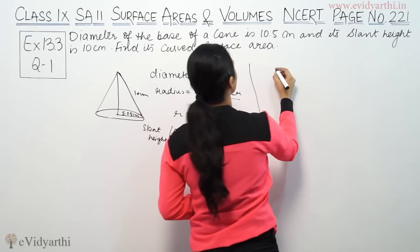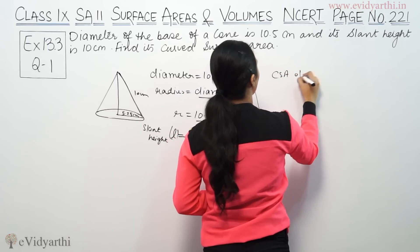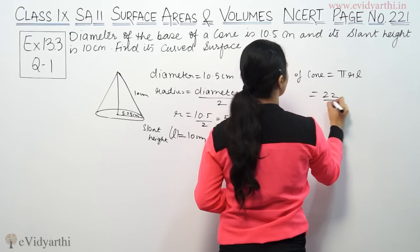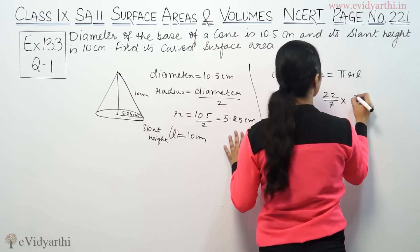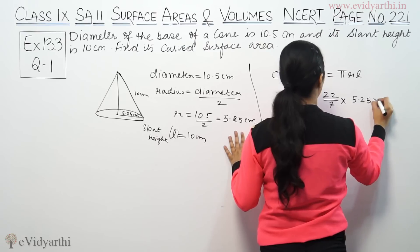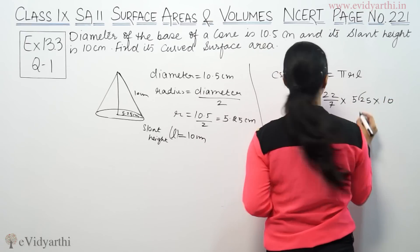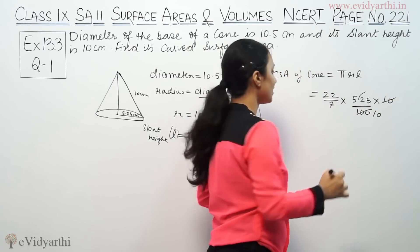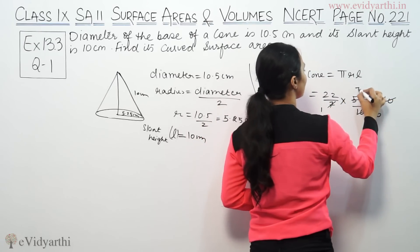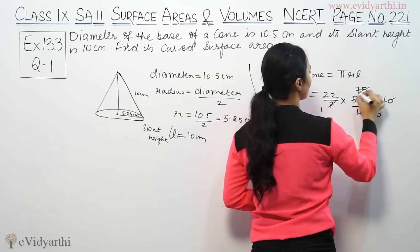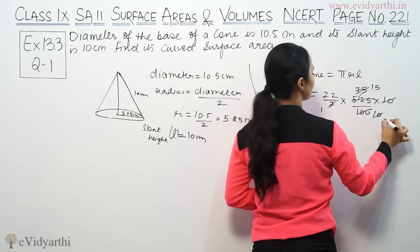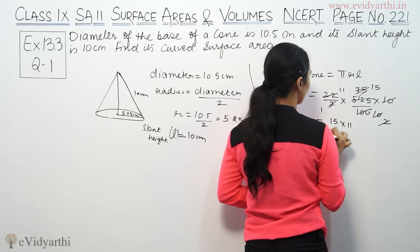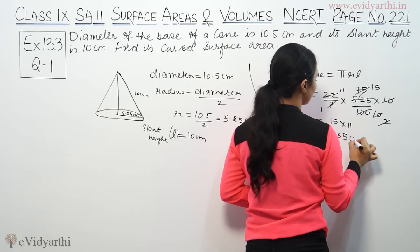The curved surface area of a cone is equal to π r l. Using π as 22 by 7, radius as 5.25, and l as 10, we calculate: 22 by 7 multiplied by 5.25 multiplied by 10. Removing the decimal and simplifying, this gives us 165 cm².